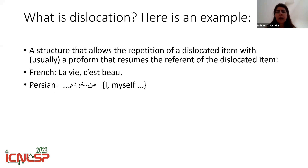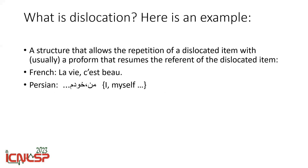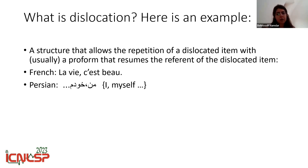What is dislocation? Here I'll give you an example. When we have the copy structure, for example in the French sentence we have 'la vie c'est vous', or in Persian I would say 'man' for 'I myself'. So we have the repetition of a dislocated item with usually a proform that resumes the referent of that dislocated item.